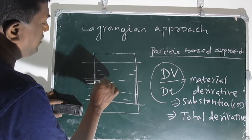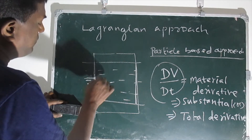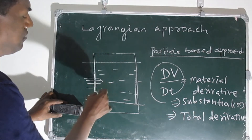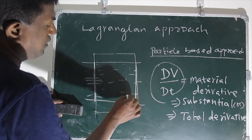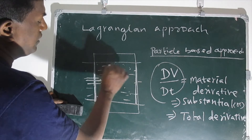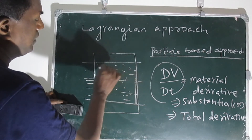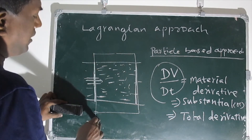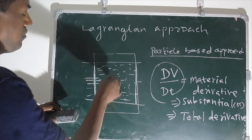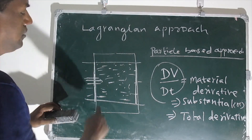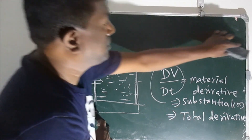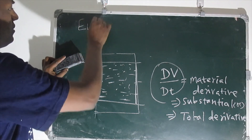Anything entering this fixed fluid flow region — we track their motions and the changes in their fluid properties. The entire lump of fluid particles has to be monitored: how they are moving, how they are changing their locations, all those things we track, monitor, and record. This kind of approach is called the Eulerian approach.